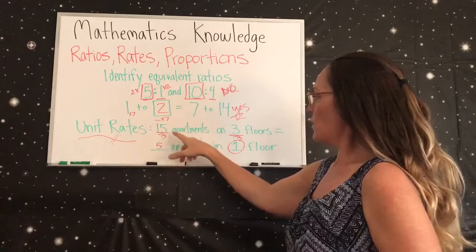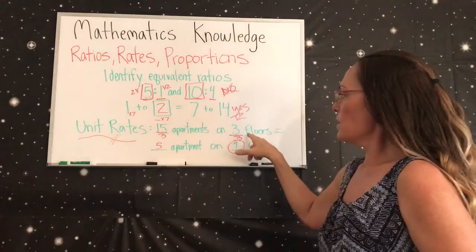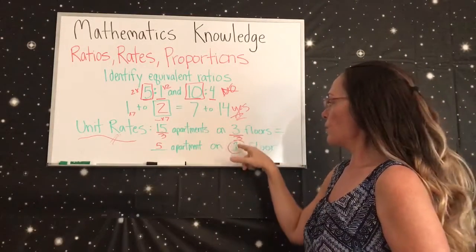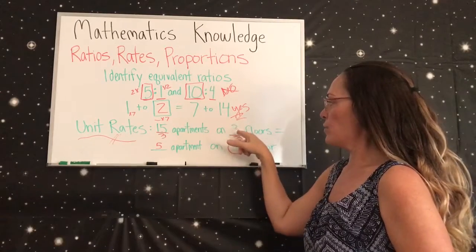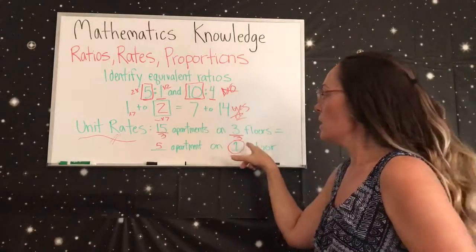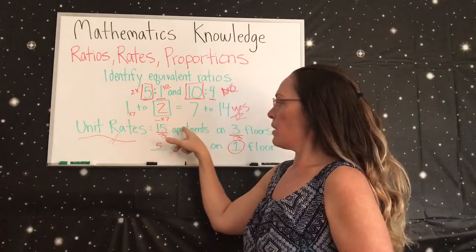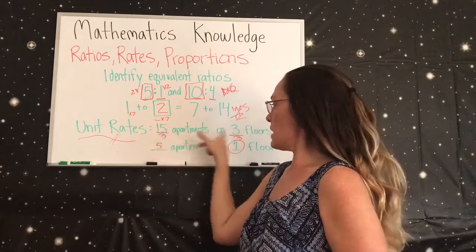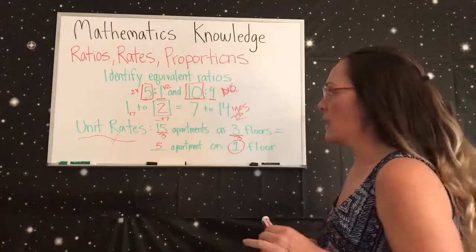So that's all you have to do. You just find, okay, we know here the floors have to be equal and we have three floors to one floor, so we're going to divide three by three to get that one. So then we go back to the 15 apartments and we divide that by the same three to get the five. So that's how it balances out.